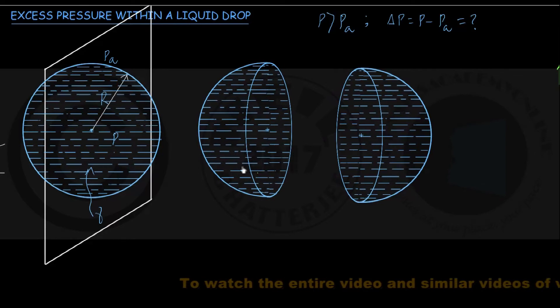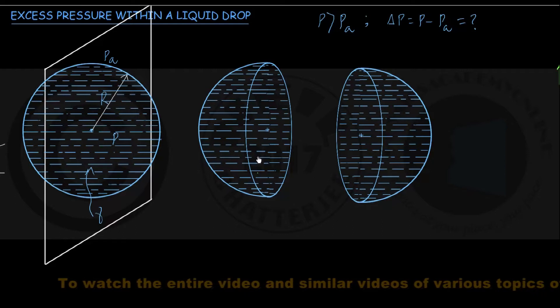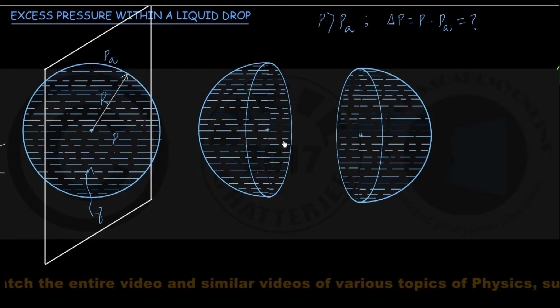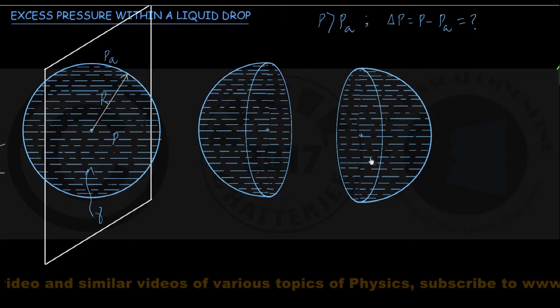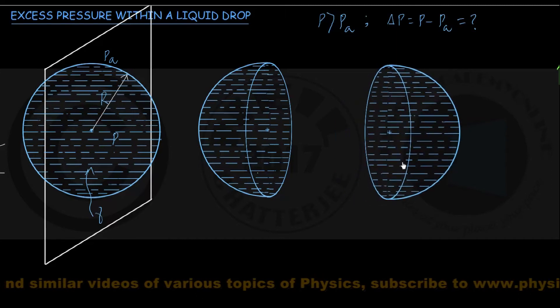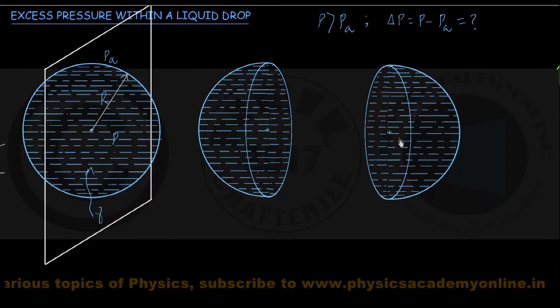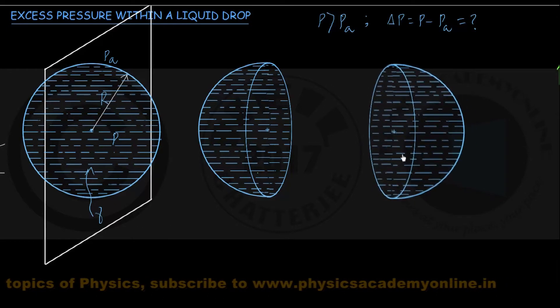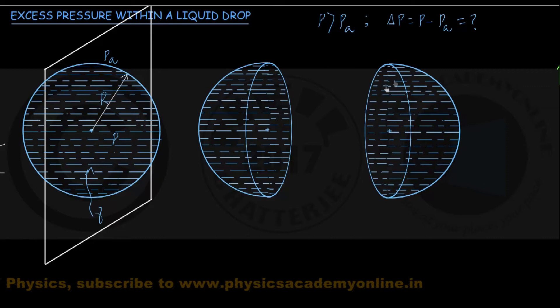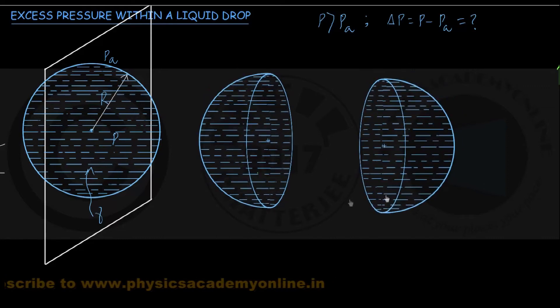Since the liquid drop as a whole is in equilibrium, it follows that either hemisphere must also individually be at equilibrium in either horizontal or vertical directions. Let us now focus on the horizontal equilibrium of the right side hemisphere. Whatever I say here for the right hemisphere will be equally valid for the left side hemisphere.